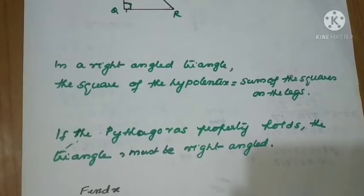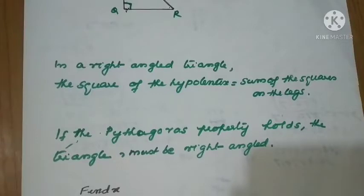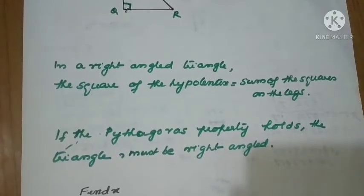In a right-angled triangle, the side opposite to 90 degrees is called the hypotenuse and the other two are called legs. Pythagoras discovered a property based on right-angled triangles: the square of the hypotenuse equals the sum of the squares of the legs. If the Pythagoras property holds good for a triangle, the conclusion is that the triangle must be right-angled.